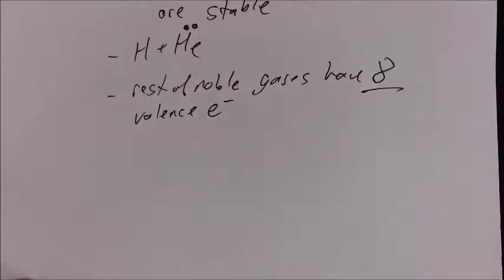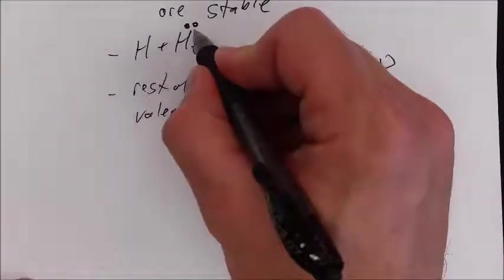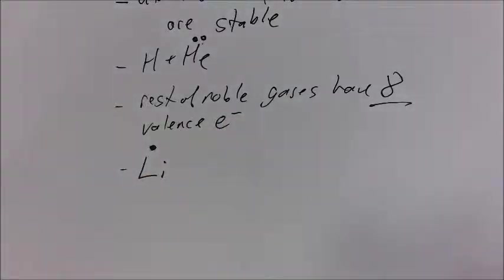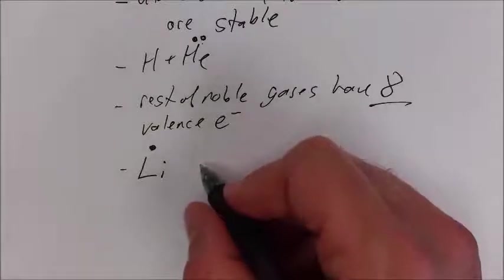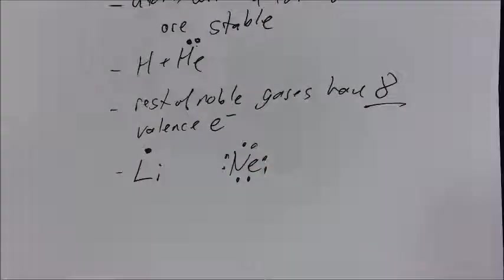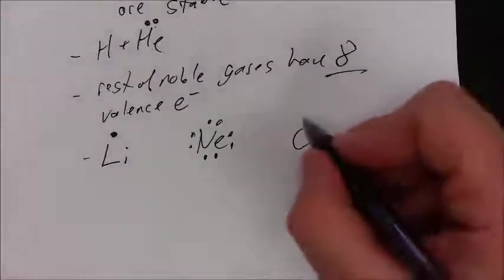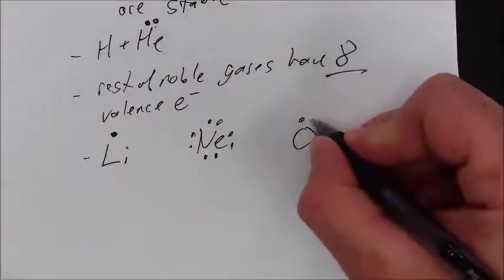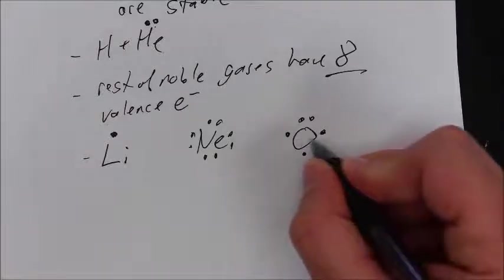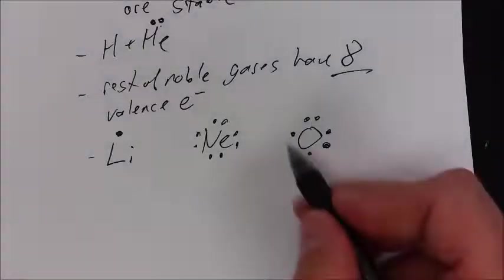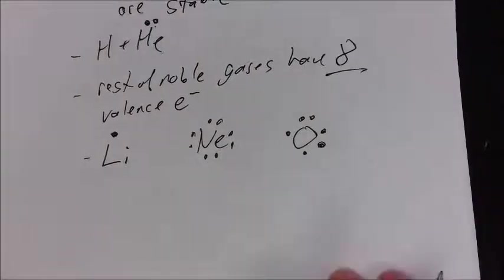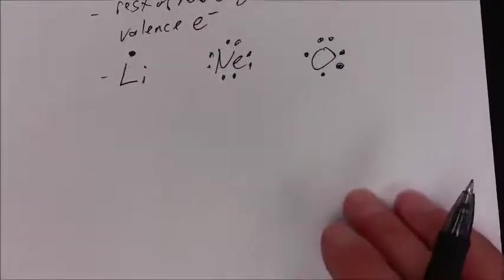You can use Lewis structures to show that. So here's a Lewis structure for helium. Lithium has then one valence electron. Neon has eight valence electrons. Oxygen has six. Now when we draw fewer than eight, the first two valence electrons are going to go up top, and the others spread out. Three, four, five. Now they can't spread out anymore, so then they start doubling up. So oxygen has six valence electrons, and it's correctly drawn like so.